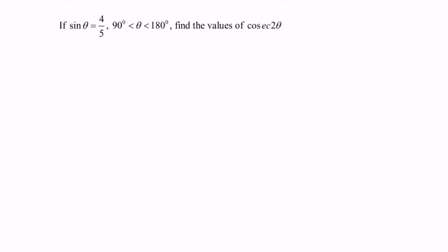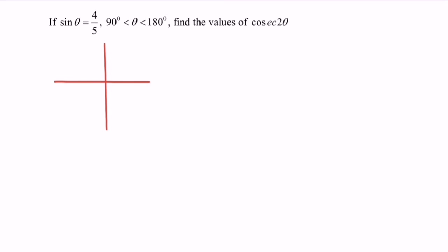If sin θ equals 4/5 and the angle is between 90° and 180°, find the value of csc 2θ. Given that sin θ equals 4/5 and the angle is between 90° and 180°, the location will be in the second quadrant.